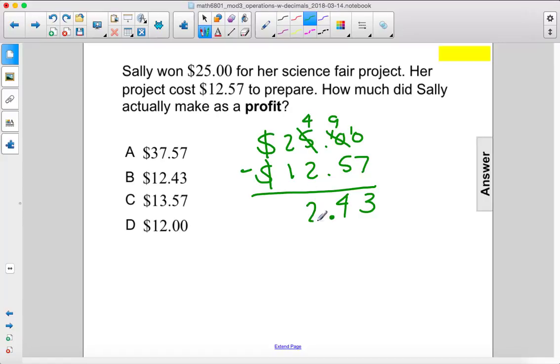We have the decimal, four minus two is two, and two minus one is one. $12.43, B.